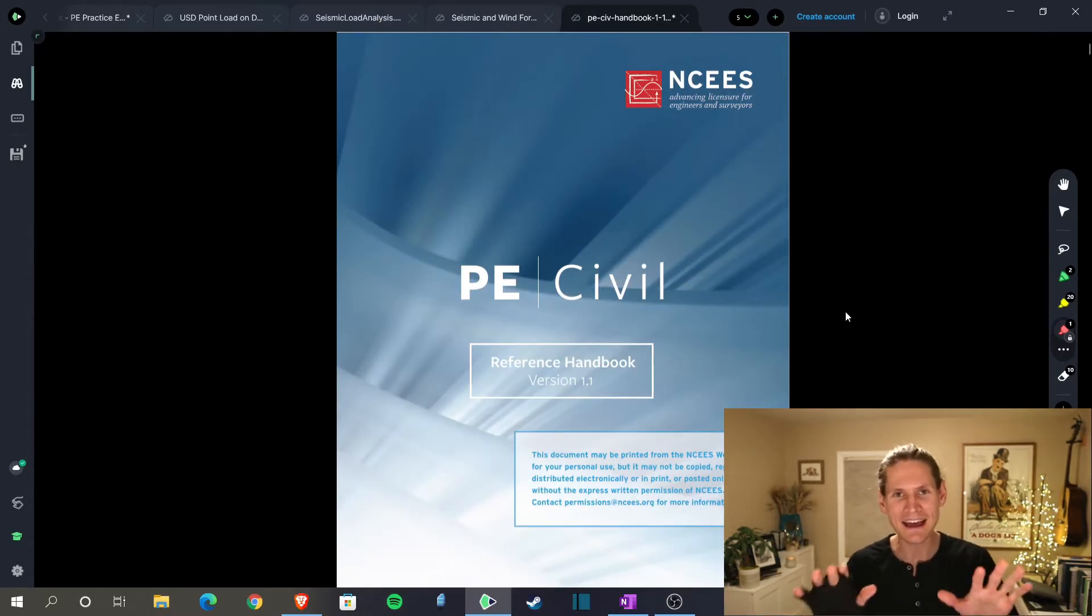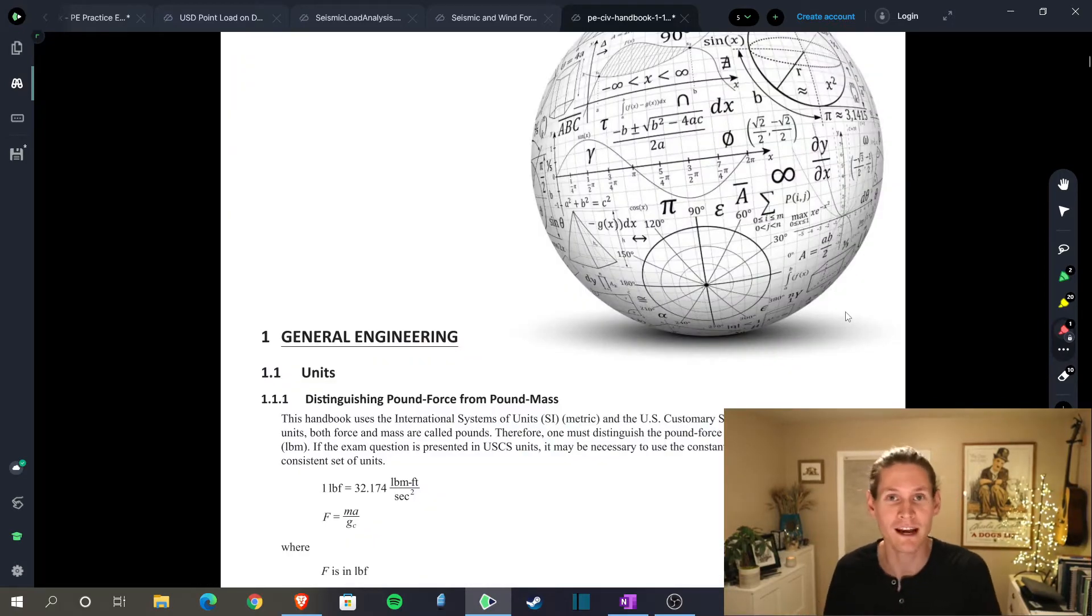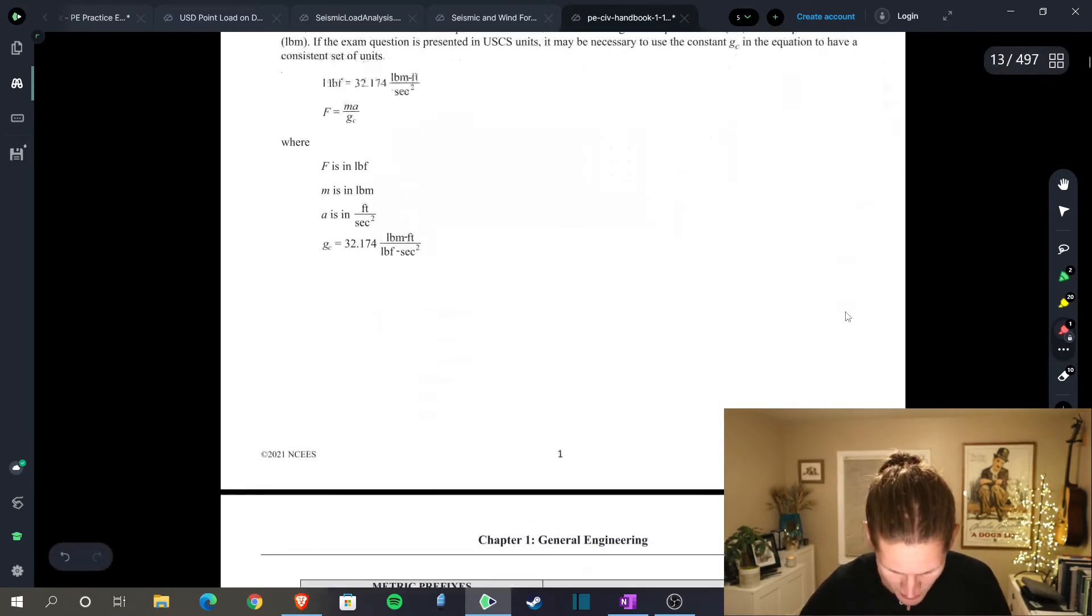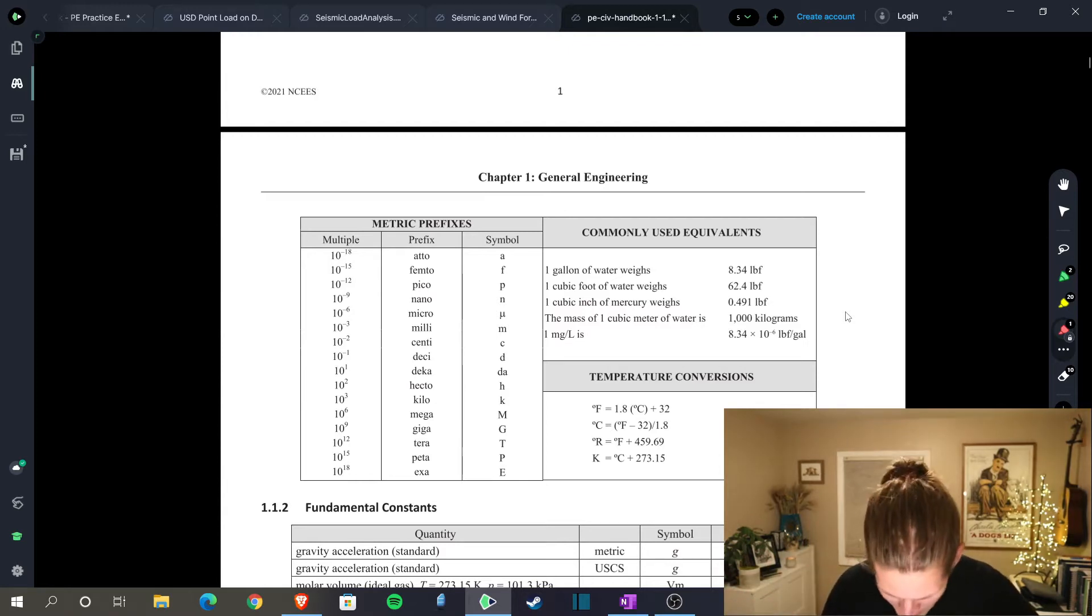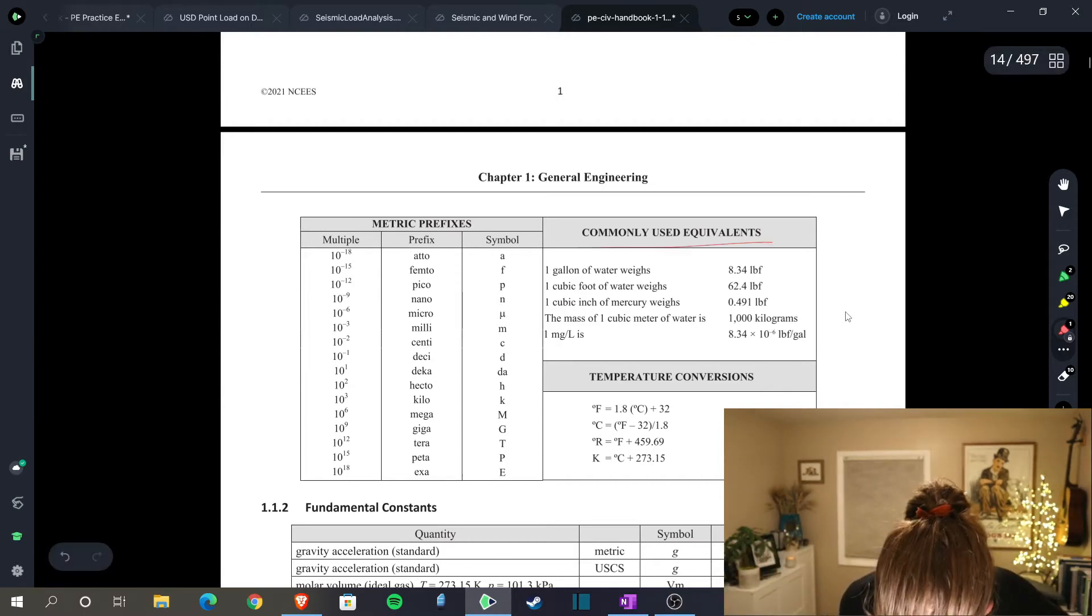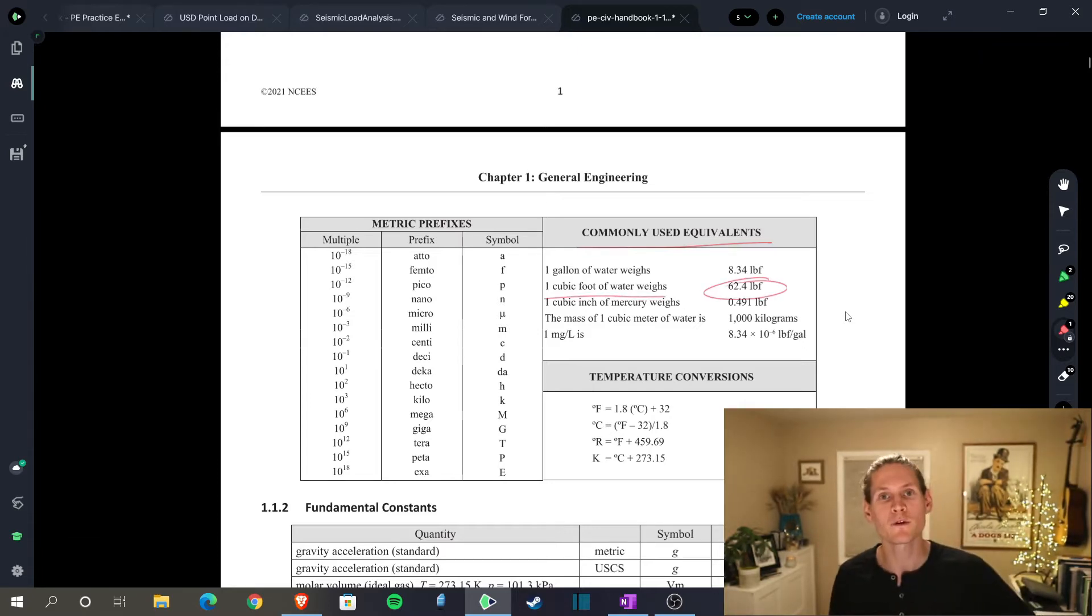Come on, it's not that bad. It's kind of bad, but it's not that bad. If we scroll down to literally the first page after the table of contents and go one page further, you'll find yourselves in chapter one, which is general engineering. This has a lot of good information for all of the disciplines - water, traffic, geotech, structural, construction. Under commonly used equivalents is one cubic foot of water weight, 62.4 pounds per cubic foot. Let's take that info and come on back.